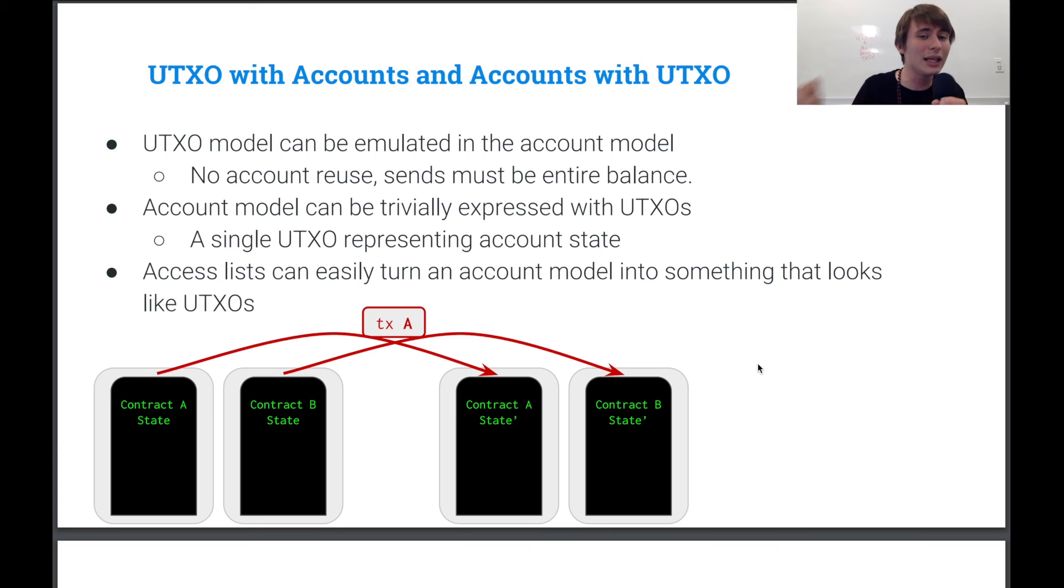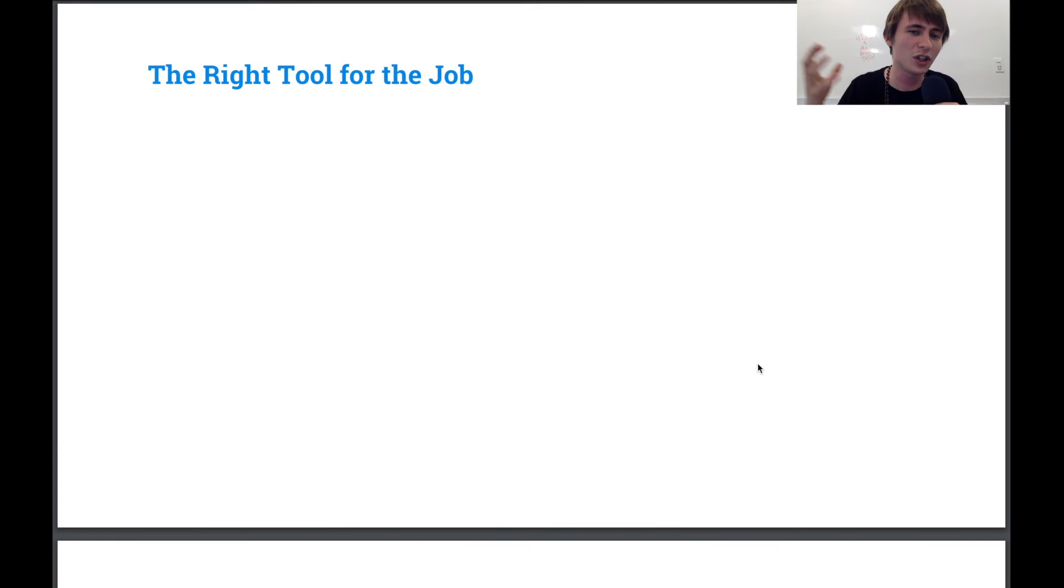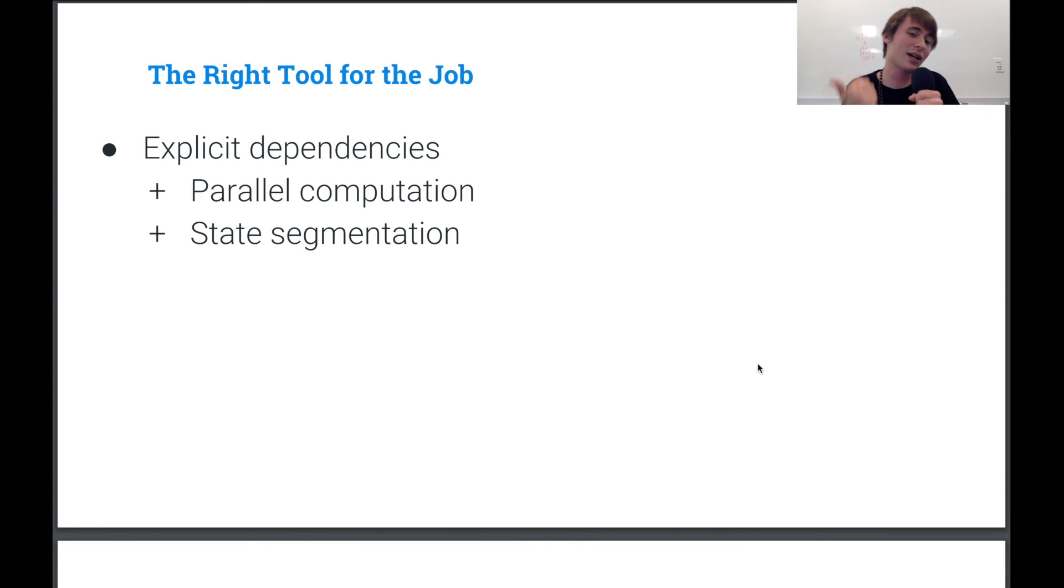So what does this all mean? Well, it means that we need to be thinking about what tool do we use for the job? We need to pick the right tool for the job. So if we want explicit dependencies, what we'll get is we'll get this nice parallel computation benefit, and we can potentially segment our state like we do in things like plasma cash, for instance.